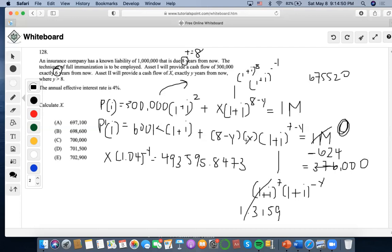Now, another thing is that this x 1 plus i negative y equals this. So I could also divide this by the other side. So I'll divide it by 493,595.8473, which is 0.9607, and all I gotta do is subtract 8. Let me erase, look like a mess.